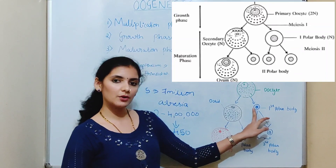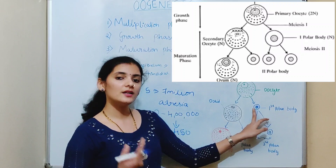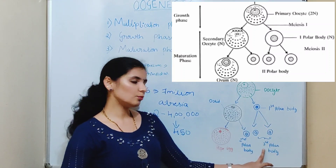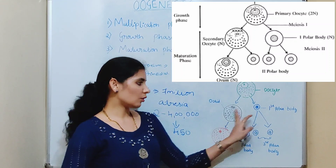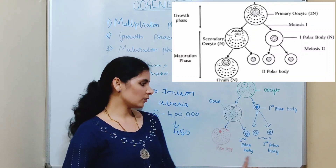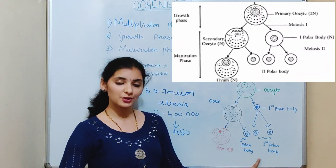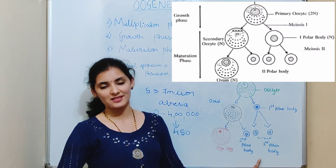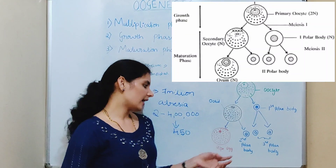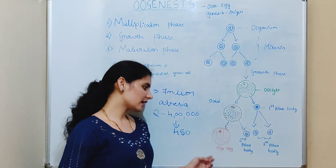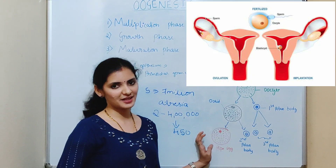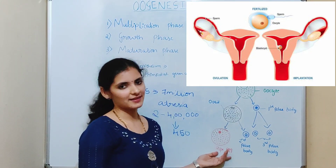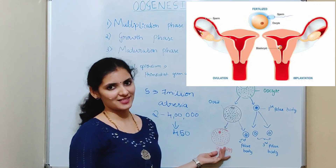The first polar body also undergoes second meiotic division and produces two more polar bodies. All polar bodies produced as a result of oogenesis will degenerate. The ripe egg or ovum is now ready for ovulation and fertilization.